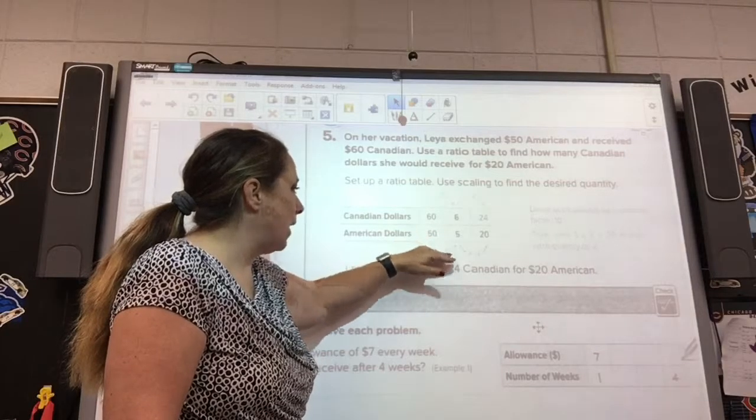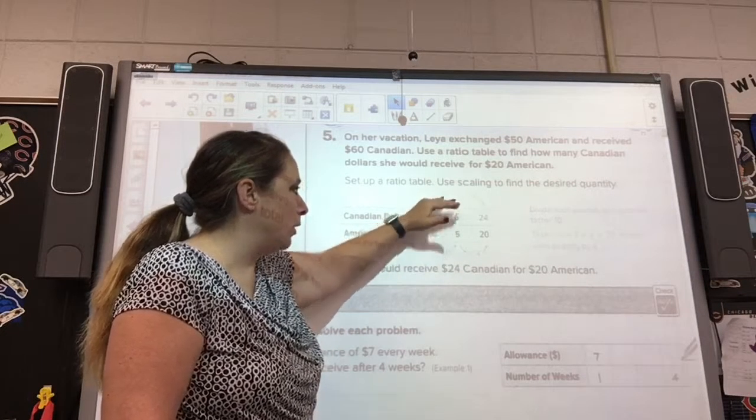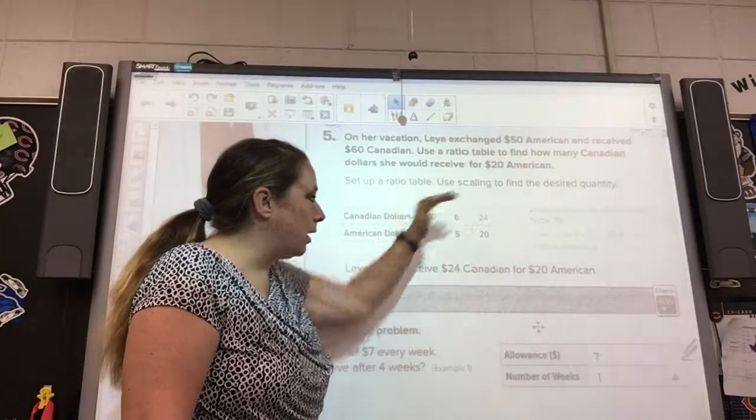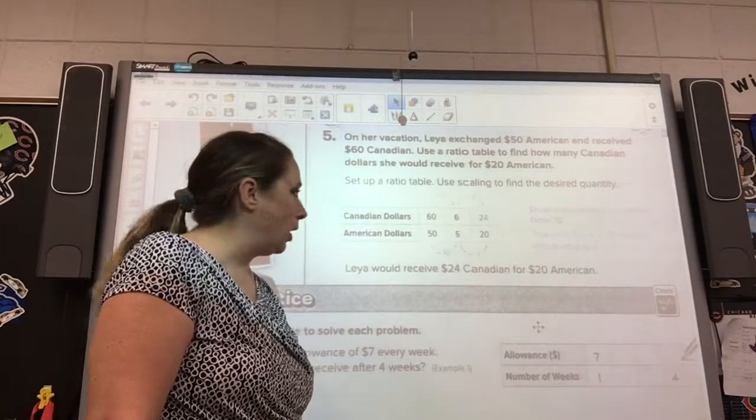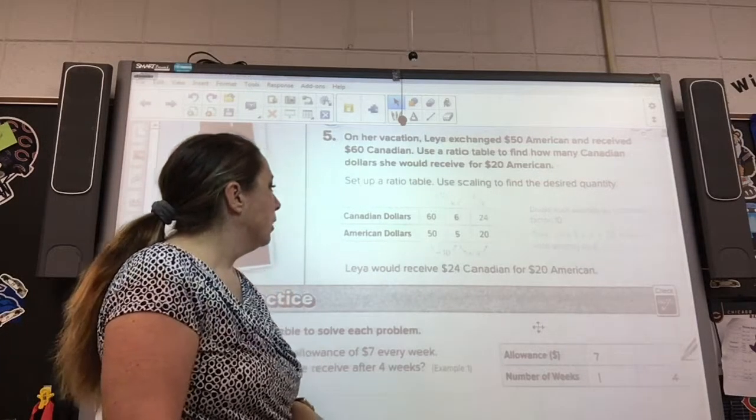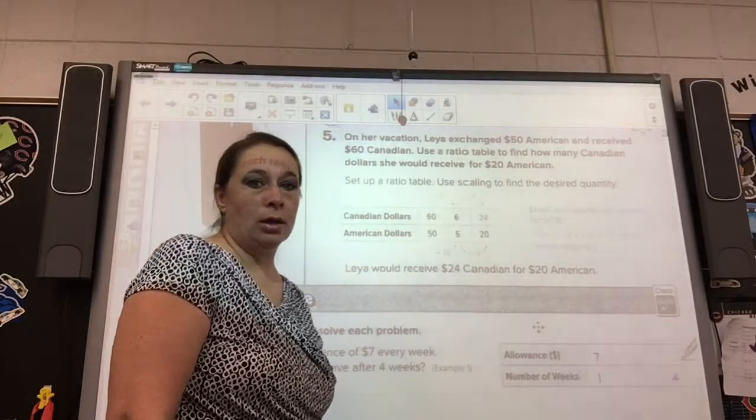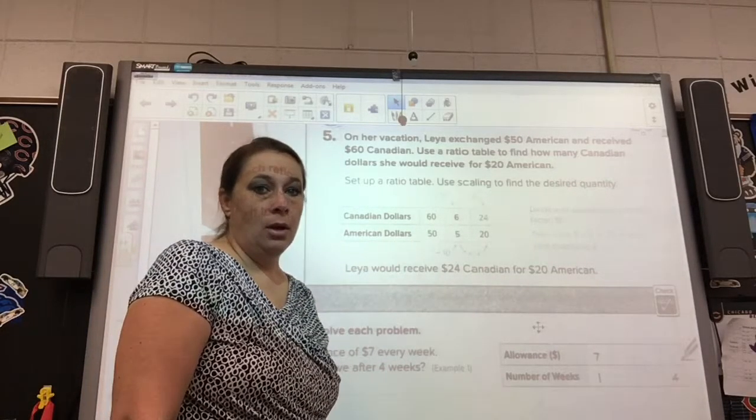Now they have to figure out how we are going to get from $50 to $20. So what they did was they divided by 10 and got $5. What you do on the bottom, you do on the top. And then they multiplied up times 4 to get to $20. And multiplied up times 4 and got $24. So, for $20 American dollars, they will have $24 Canadian dollars.